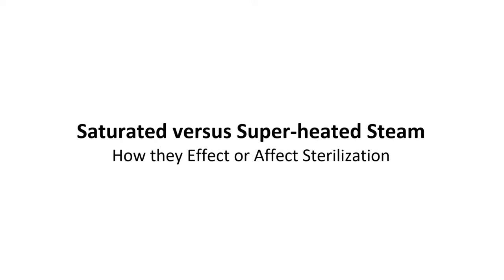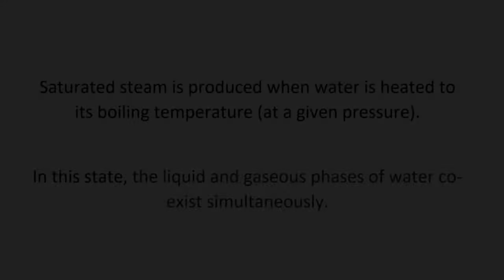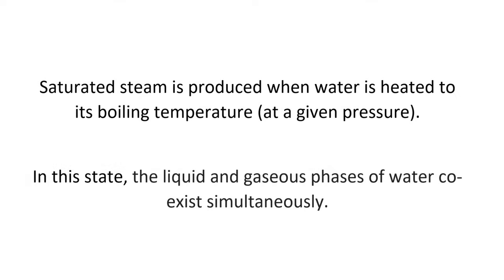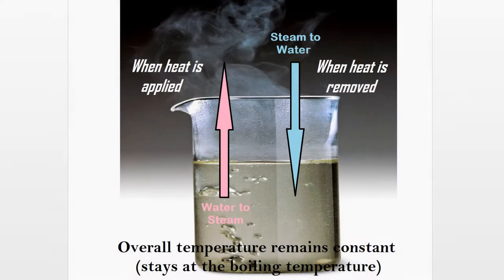It is worth mentioning the difference between saturated steam and superheated steam and their differential roles in sterilization. Saturated steam is the vapor form of water produced when water is heated to its boiling temperature under the prevailing pressure condition. In this state, the liquid and gaseous phases of water exist simultaneously. Applying a little more heat will cause more of the liquid water to turn into saturated steam, and removing a little heat will cause some of the steam to condense back to liquid water, but this slight change in heat supply will not result in a temperature increase or decrease beyond or below the boiling temperature.